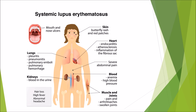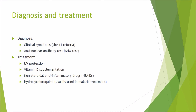A predominant symptom of SLE is the characteristic butterfly rash across the cheeks and forehead, which is unique to SLE patients. Many associated symptoms result from these anti-nuclear antibodies. Diagnosis can be based on clinical symptoms following the 11 ACR criteria, or by the anti-nuclear antibody (ANA) test to detect the presence of anti-nuclear antibodies.